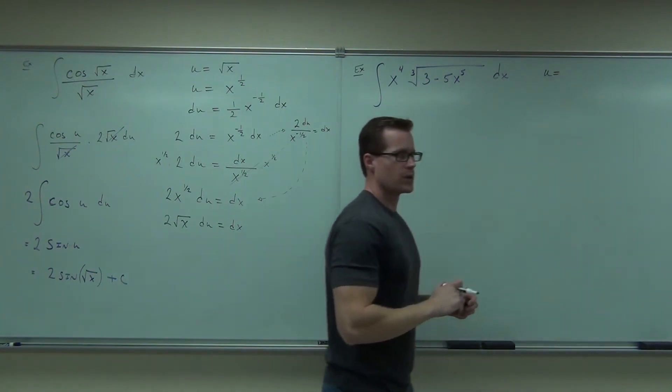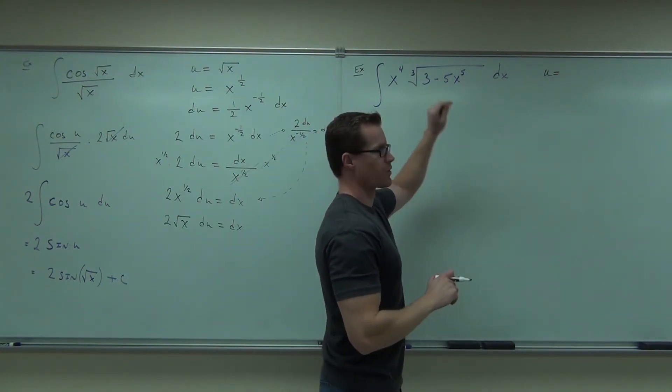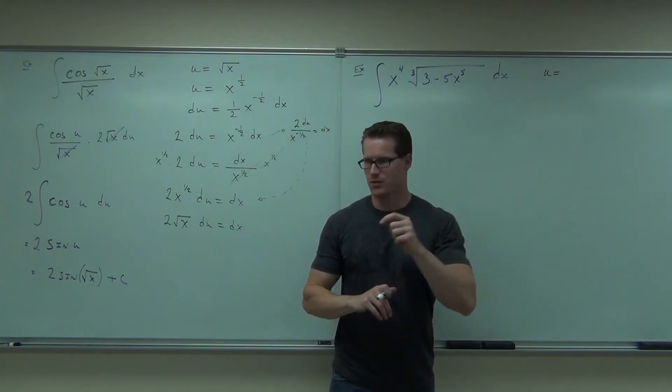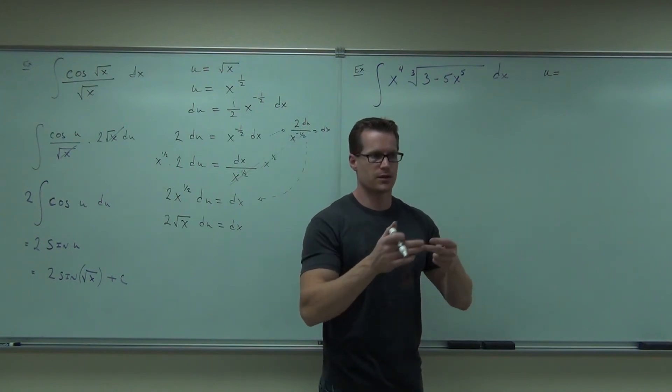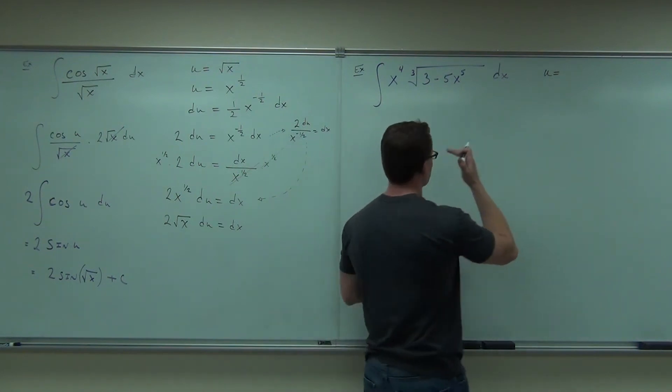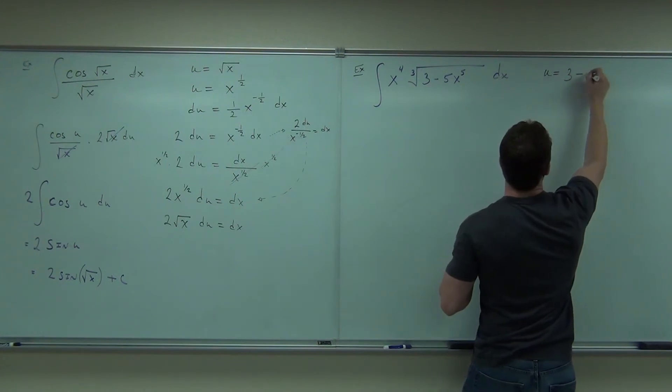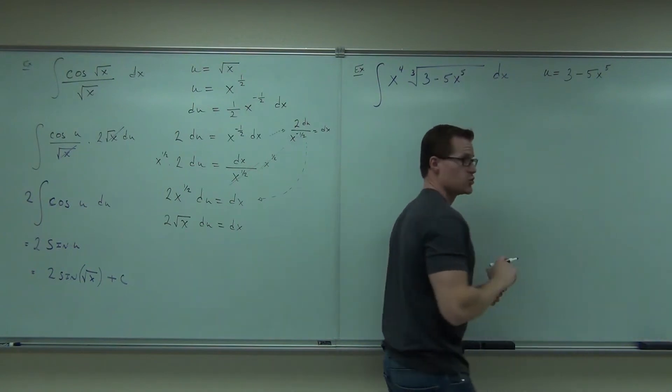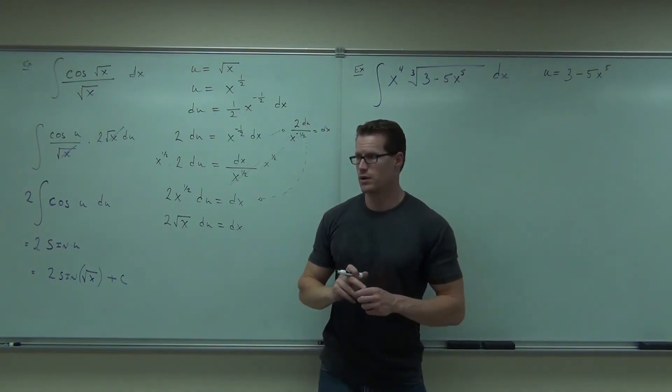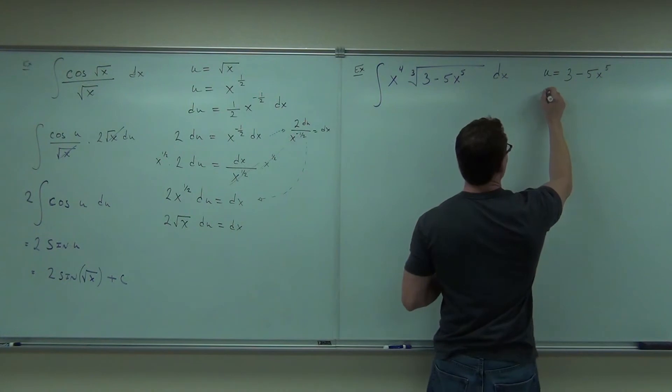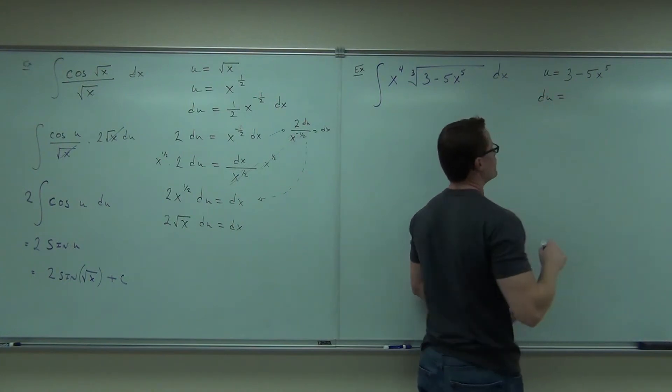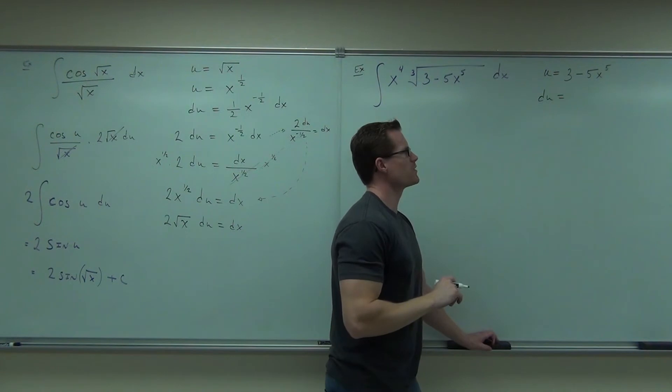When I pick my u, should I pick it with the cube root or without the cube root? Definitely without. With the cube root it's chain rule, very hard to do. You have some crazy stuff going on. Did you pick that as your u? It's inside something. The derivative is kind of up there, not really because you have a constant but kind of up there. It's a good sign.